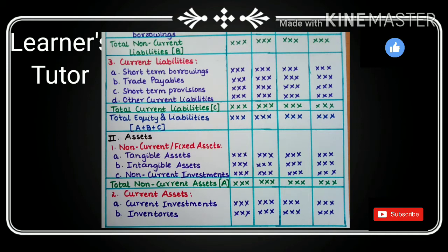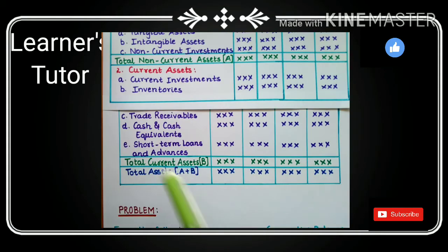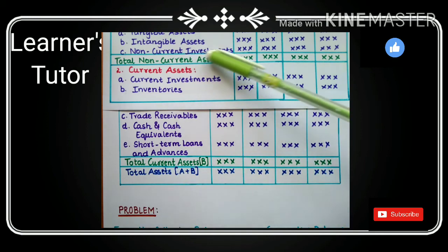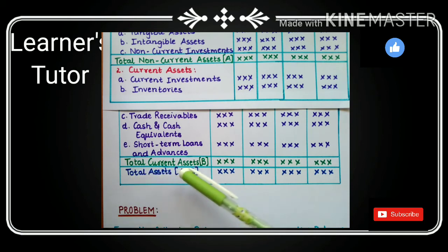Debtors, cash, stock also will come under that. Next, current assets: we have current investments, inventory, trade receivables (nothing but bills receivable), cash and cash equivalents (that is cash in hand, cash at bank), short-term loans and advances. Total current assets is B. Now for total assets you should add non-current assets (that is the total of non-current is A) and total of current assets is B. A plus B is the total assets.